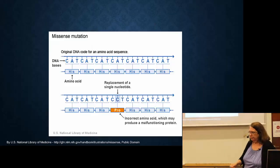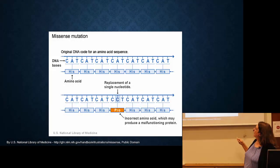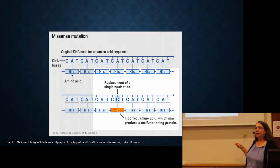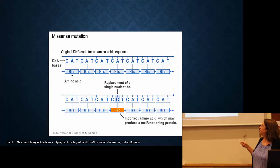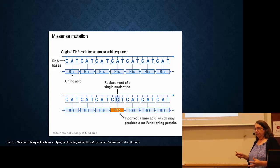Here is a simpler example where everything is CAT, which codes for histidine. If you change one of these bases from an A to a C, all of a sudden when the ribosome makes this protein, instead of histidine you get proline. This could completely change the protein and make it completely inactive. So mutations are in the DNA, but they're usually expressed as changes to the protein.